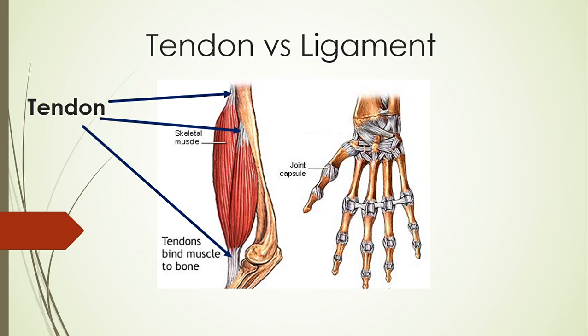First, the tendon physically connects the muscle to the bone because the bone itself is not going to be able to move on its own. The muscle is the force-generating tissue of our body. Without the muscle, we would not be able to move or generate the force needed for any movement. You can see that this particular part of the tendon is going to cause the bottom half of this forearm — because this is the elbow — to actually move.